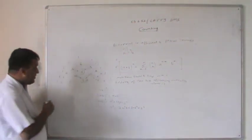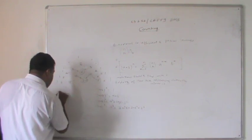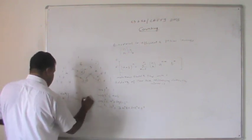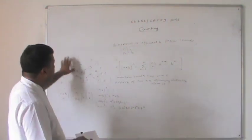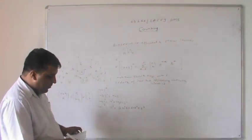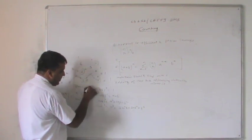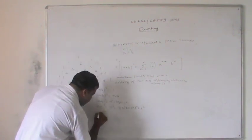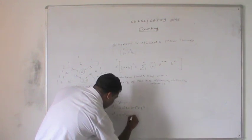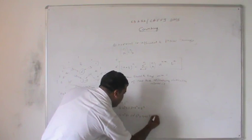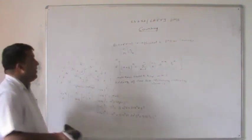Similarly, (a+b)^4 = a⁴ + 4a³b + 6a²b² + 4ab³ + b⁴, and so on. These coefficients are the binomial coefficients from Pascal's triangle.